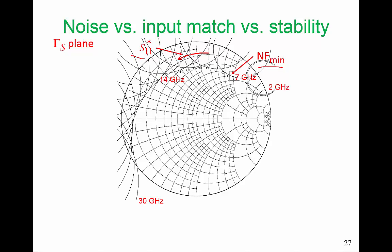we see that this S11 conjugate is not a good choice. Our circuit would not be unconditionally stable if we chose our input matching network so that the input reflection coefficient followed that S11 conjugate. We see that our minimum noise figure is on the edge of stability.